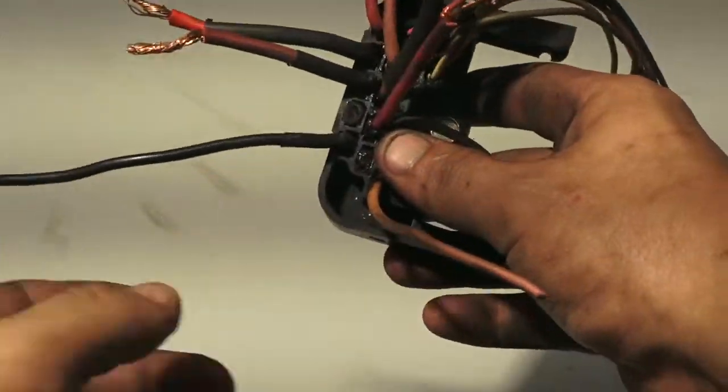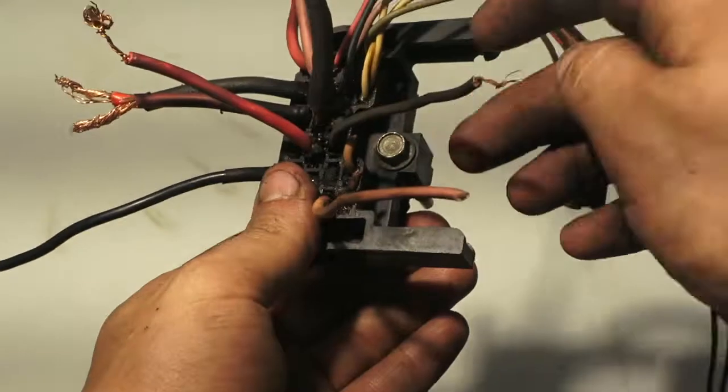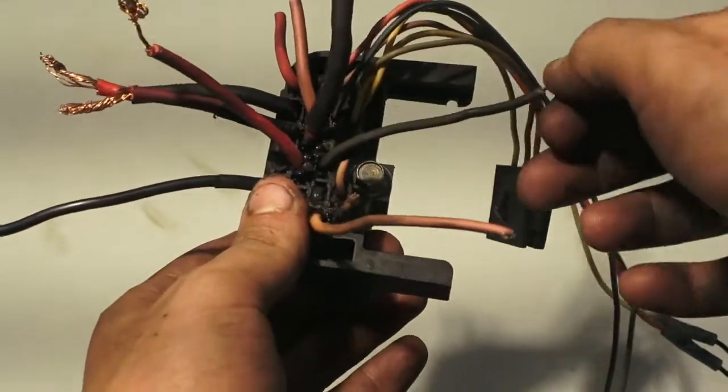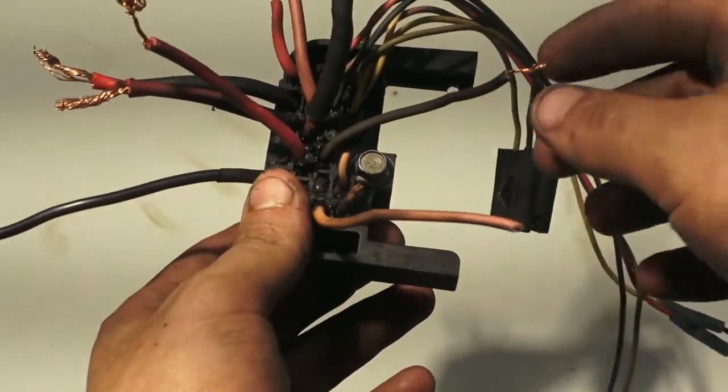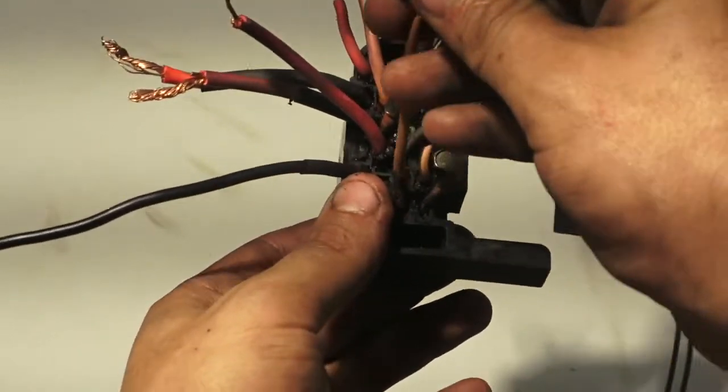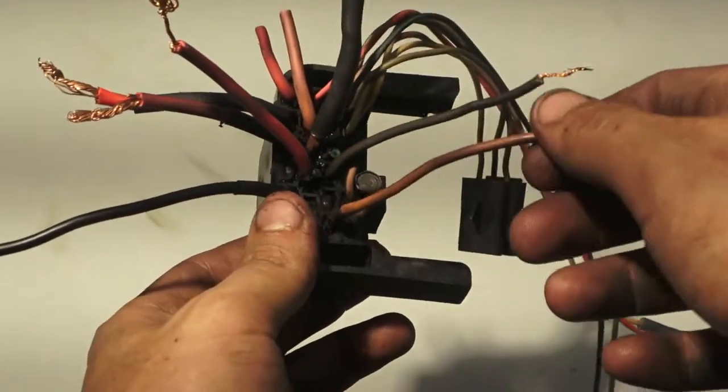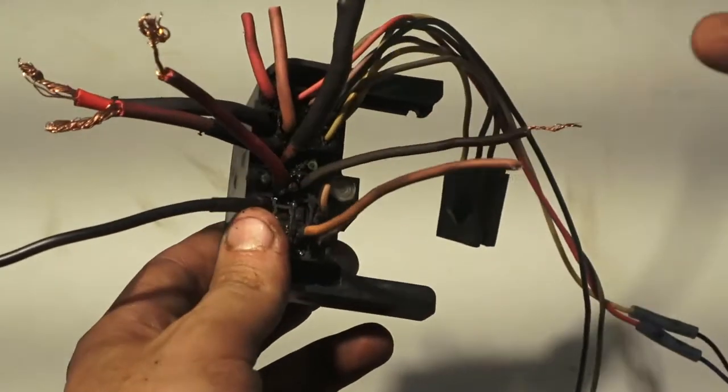So that's pretty much all you need to know for that. This wire here I believe used to go to your oil pressure for your gauges. This one here I believe used to go to your alternator for your gauges. This grabs power off the alternator so you can see how many volts the truck's running.